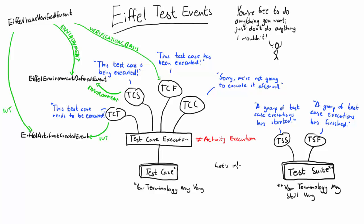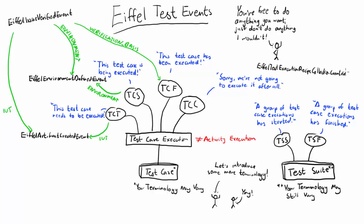One criterion for grouping test case executions into suites is based on test execution recipe collections. This is one of the less mainstream concepts of Eiffel. The test execution recipe collection created event stems from separation of concerns. Ultimately, selecting tests for execution at any particular time is one concern, and executing them is another. The kind of setup this event type is designed for is where an orchestrator — let's call it a CI server — decides that it's time to run a test activity, but has no idea which tests to execute, because that is not its concern.